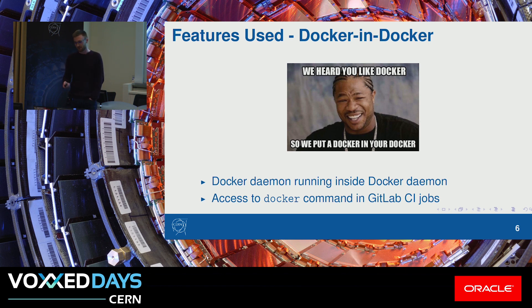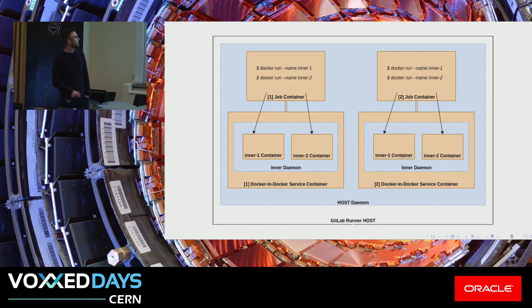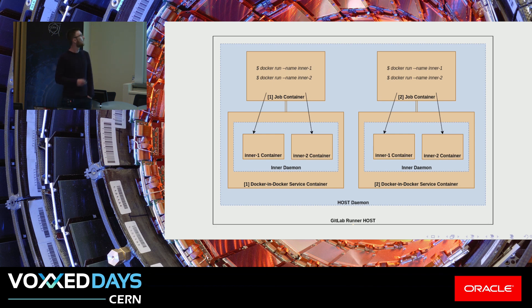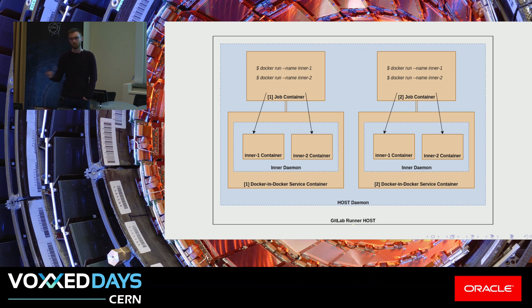It is a controversial topic, but it's nice for testing because it allows you to spin up containers in your test in an isolated daemon. So you have a GitLab runner host with its own daemon, and when the runner host gets a job from GitLab, it will spin up a pair of containers: the job container, which runs your test code, and a Docker-in-Docker service container, which is where your inner daemon is running. With Docker-in-Docker, you can spin up multiple jobs with the same scripts without them interfering, because they have their own daemon. This goes as well for exposed ports and volumes.